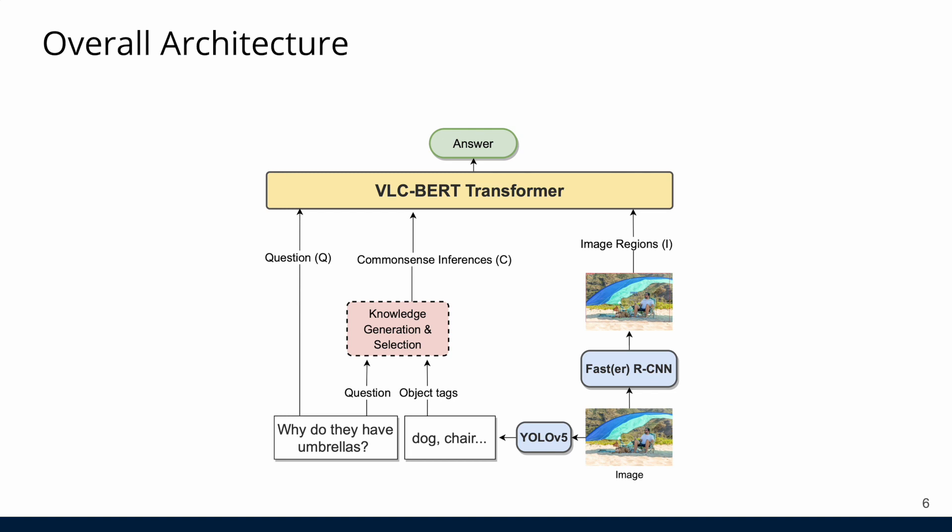Our overall architecture looks like this. We first obtain tags using an object detector and feed them alongside the question into our knowledge generation and selection module. We use this generated knowledge in a transformer-based VL model to predict the correct answer.